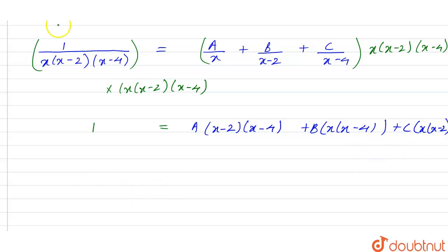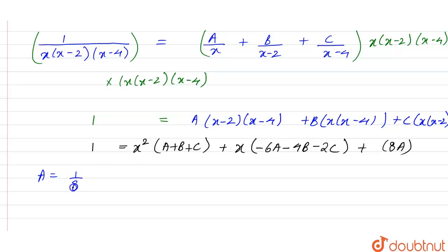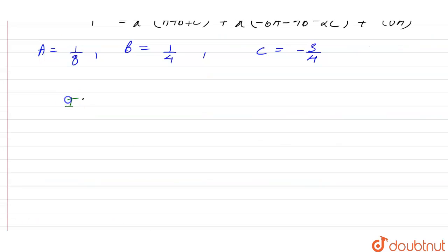Comparing the terms after cross multiplication, we have x squared into (A plus B plus C), plus x times (minus 6A minus 4B minus 2C), plus constant 8A, equal to 1. From here, A equals 1/8, B equals 1/4, and C equals minus 3/4.